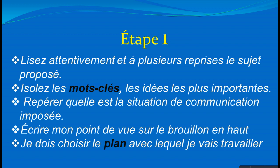Commençons par la première étape : qu'est-ce que je dois faire pour mon sujet de production écrite ? Je dois lire attentivement et plusieurs fois mon sujet. Après la lecture à plusieurs reprises, je souligne les mots clés, c'est-à-dire les mots importants qui sont dans le sujet, parce que je dois les utiliser dans mon introduction. Je dois repérer la situation de communication, c'est-à-dire ce qui est demandé. J'écris mon point de vue sur le brouillon en haut pour ne pas changer d'avis à chaque fois. Enfin, je dois choisir le plan avec lequel je vais travailler.